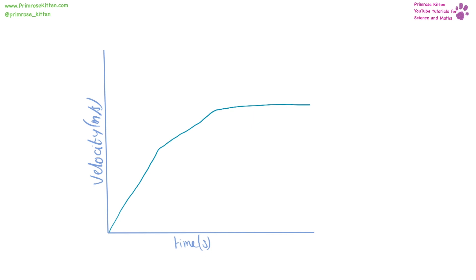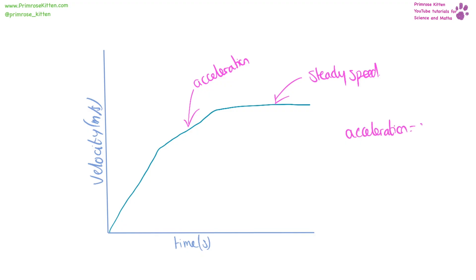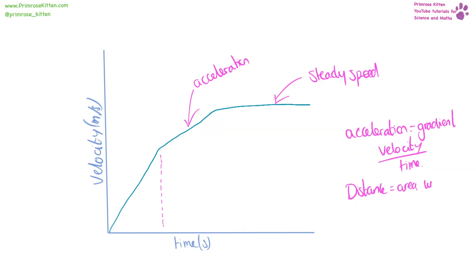Velocity-time graphs look very similar to distance-time graphs but are different. For example, the flat section now means the object is moving at a steady speed. When the line is increasing, the object is accelerating. Acceleration is equal to the gradient, which is velocity over time. If we want to work out the distance travelled, that is the area under the graph. For a triangular section, that is half times base times height.